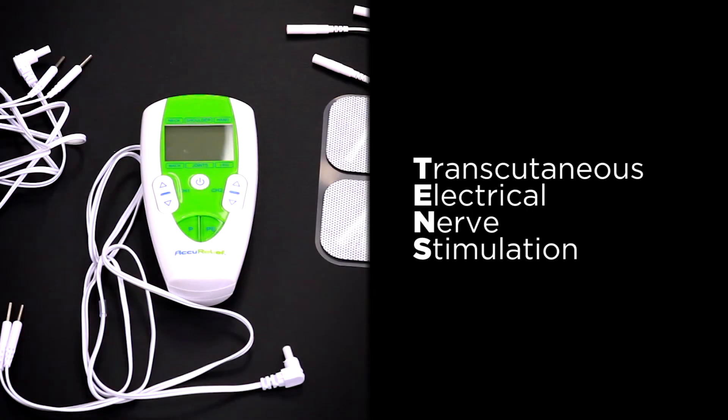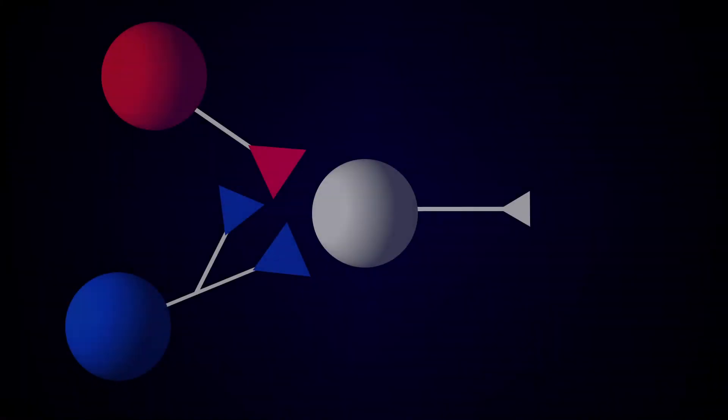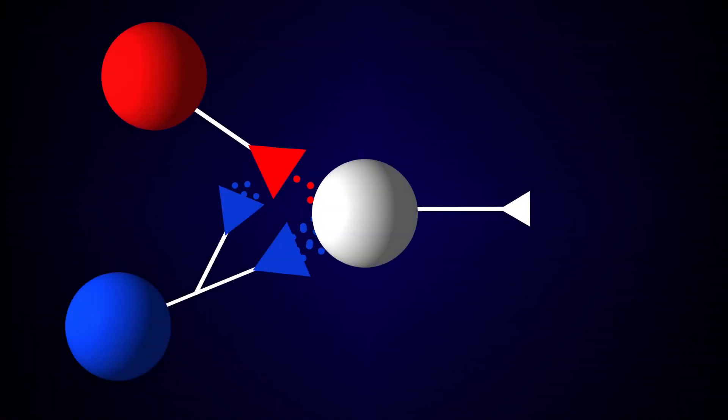TENS reduces pain through multiple mechanisms. It can change how the brain responds to pain. In the brain, the increased activity of neurons and chemicals that turn on pain are reduced. At the same time, there is an increased activation of neurons and chemicals that turn off pain.